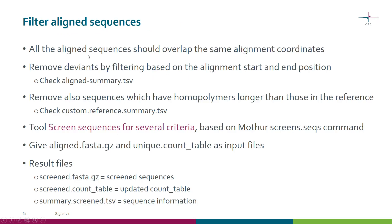Ideally all the aligned sequences should overlap the same alignment coordinates. This doesn't always happen, so we want to remove the deviants by filtering based on the alignment start and end position. In order to know which coordinates to use, you can check the aligned summary file.